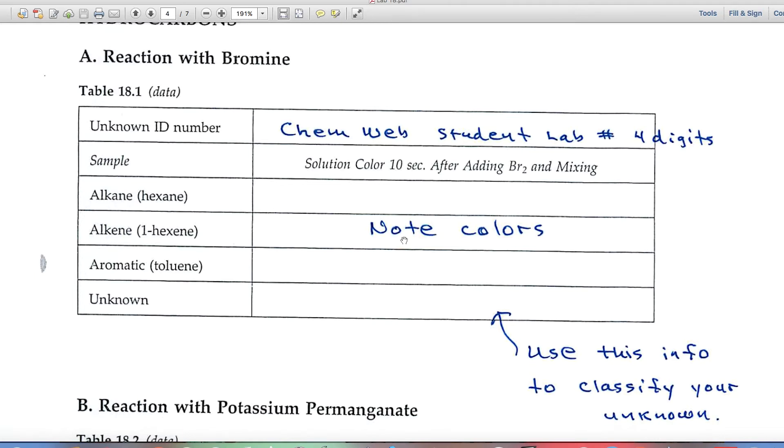In most cases, the red color of the bromine will disappear, and you'll get a different color. And then you'll also test your unknown, and you'll use this information to classify your unknown.